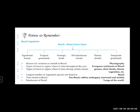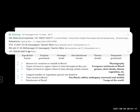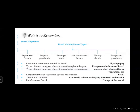The reason for variation in rainfall in Brazil is due to its physiography. In regions where it rains throughout the year, that type of forest is known as evergreen rainforest. When it rains during certain seasons, that type of vegetation includes grasses, short shrubs, thorny vegetation, etc.